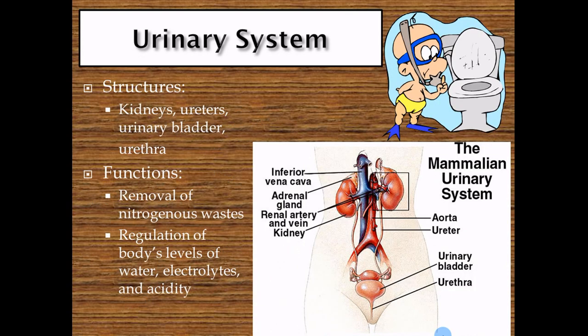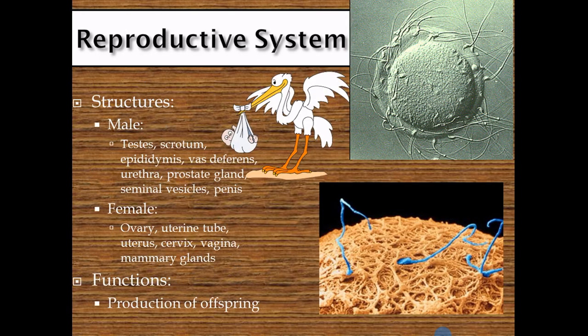The urinary system excretes waste products and extra fluids from the body. It also regulates electrolytes like sodium, potassium, and chloride, and it helps regulate pH — just like the lungs, the kidneys can excrete acidic urine to get rid of acids if the body is too acidic, or get rid of bases if the body is too basic.